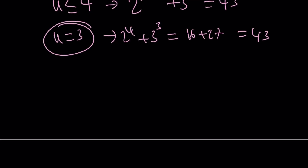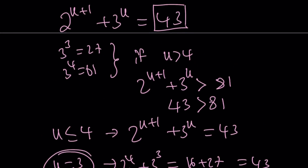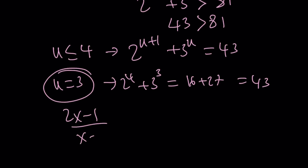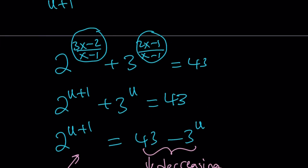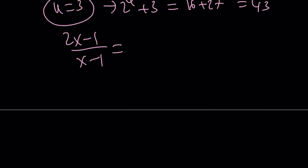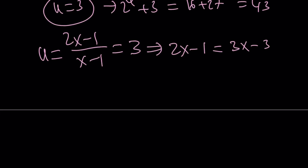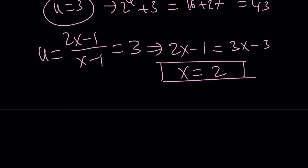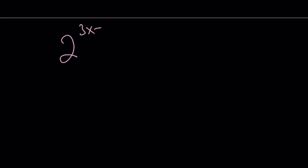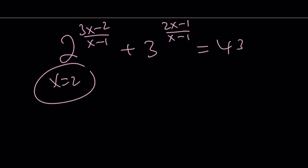So u equals 3, but what is u? u is (2x minus 1) over (x minus 1). Setting that equal to 3 and cross-multiplying: 2x minus 1 equals 3x minus 3, so x equals 2. Therefore x equals 2 is the solution. We can verify: 2 to the power of (3(2) minus 2) over (2 minus 1) plus 3 to the power of (2(2) minus 1) over (2 minus 1) equals 43, and x equals 2 satisfies this equation.